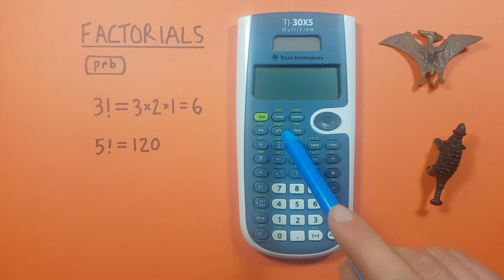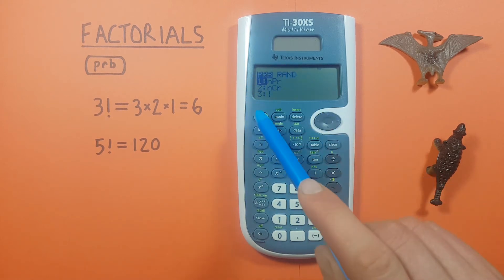What we have to do is press the PRB key. That will bring us up to this menu here and we see the third option is factorial.